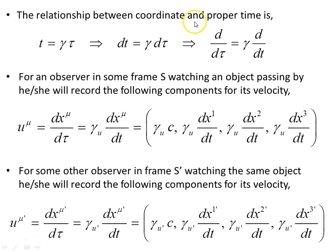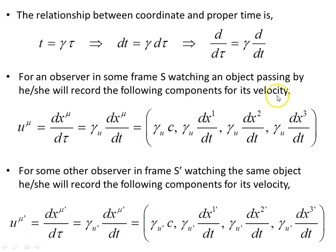The relationship between coordinate time and proper time is t = gamma times tau, which implies dt = gamma d tau, and the differential operator d/d tau = gamma times d/dt. For an observer in some frame S watching an object passing by, he or she records the following components for its 4-velocity: u^mu = dx^mu/d tau = gamma times (c, dx/dt, dy/dt, dz/dt). These are the four components of the velocity vector as seen by that observer.